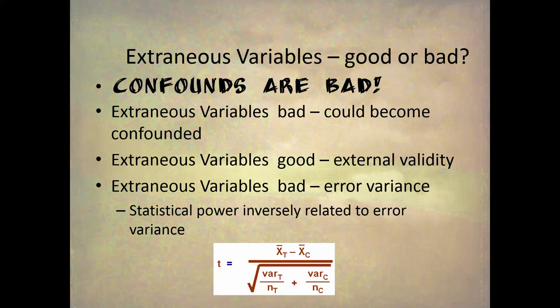Finally, extraneous variables create error variance, and statistical power is inversely related to error variance. The more error variance, the less statistical power, and the less likely you'll find a significant effect if it really exists. That would be bad statistical conclusion validity. In my own experiments looking at the relationship between intention and the amount of blame given for accidents, I was getting a result that wasn't statistically significant. A researcher in that situation has to increase statistical power, which means reducing error variance.